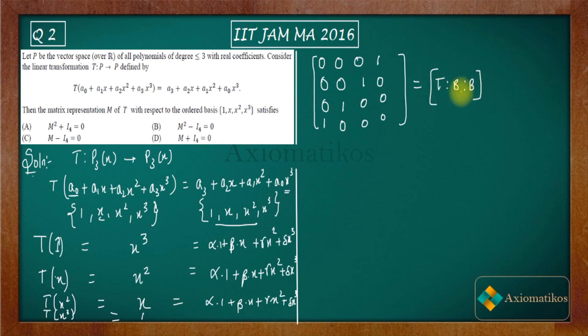So this is actually written as T with respect to bb. Since these two bases are the same on the left side and on the right hand side, that's why I am writing bb. It may happen that you have to write b₁, b₂ in case the basis is different. So this is your M.